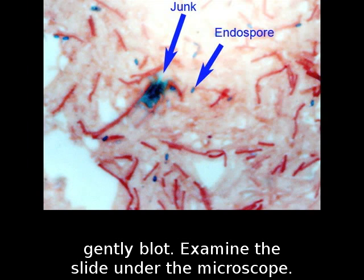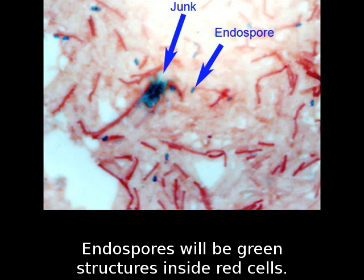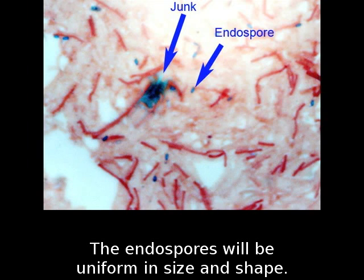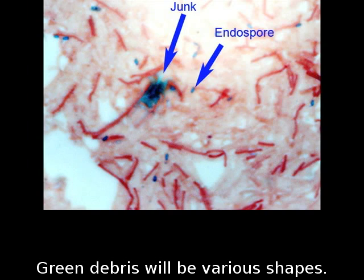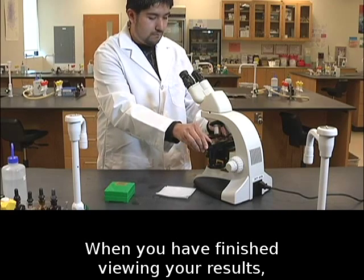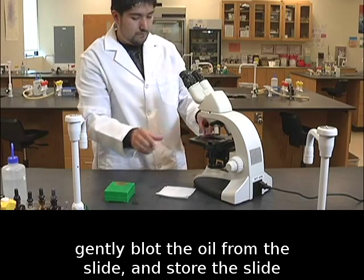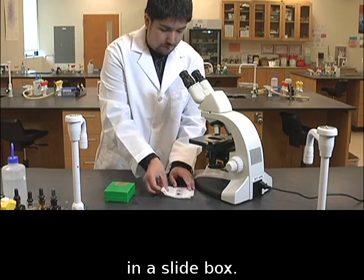Examine the slide under the microscope. Endospores will be green structures inside red cells. Some endospores may have been released from cells; the endospores will be uniform in size and shape. Green debris will be various shapes. When you have finished viewing your results, gently blot the oil from the slide and store the slide in a slide box.